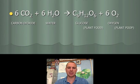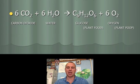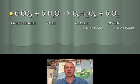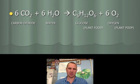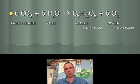A plant makes oxygen, which we need to survive, plus glucose, which is basically plant food. I like to think of glucose as the plant's food and oxygen as the plant's waste product — but without that waste product, we wouldn't be able to survive.